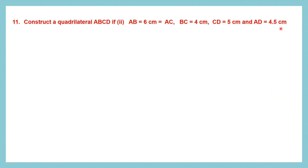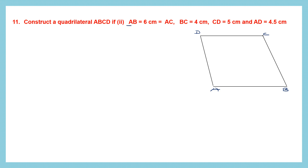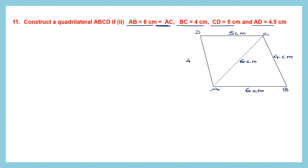Question 2. We have all these measurements: AB is 6 centimeters and that is equal to AC. BC is 4 centimeters, CD is 5 centimeters, and AD is 4.5 centimeters. Let's draw a rough figure with base AB. Note that AC is the diagonal and is also 6 centimeters. BC is 4 centimeters, CD is 5 centimeters, and AD is 4.5 centimeters. Based on this rough figure we are going to draw our final quadrilateral.